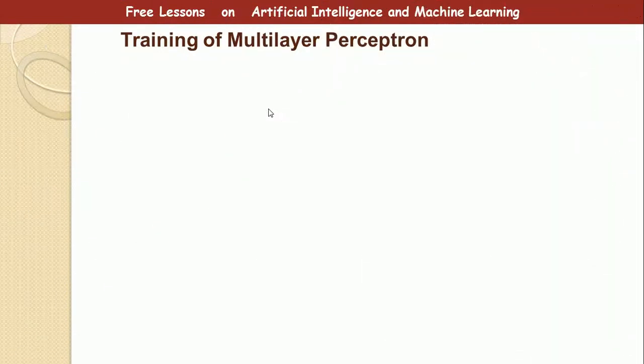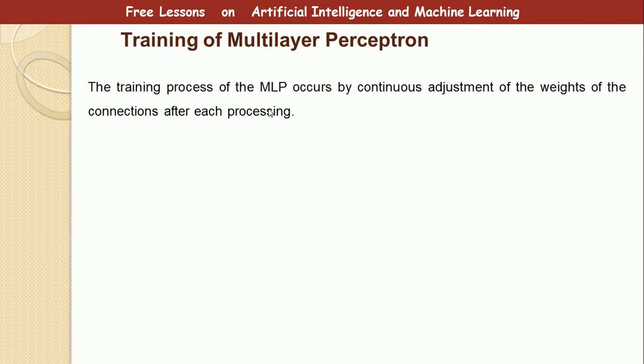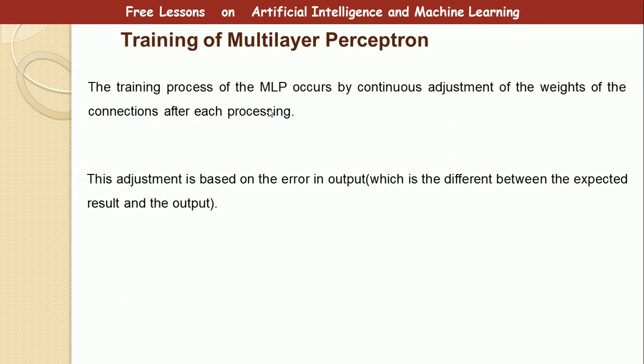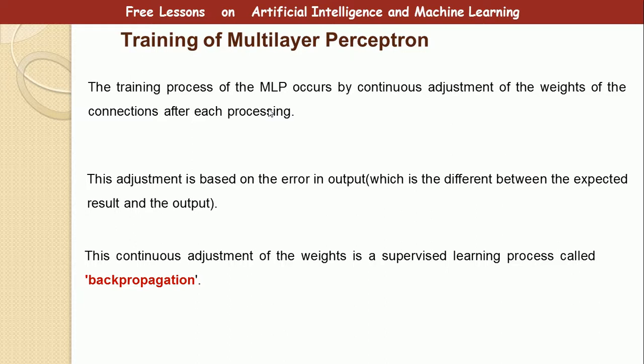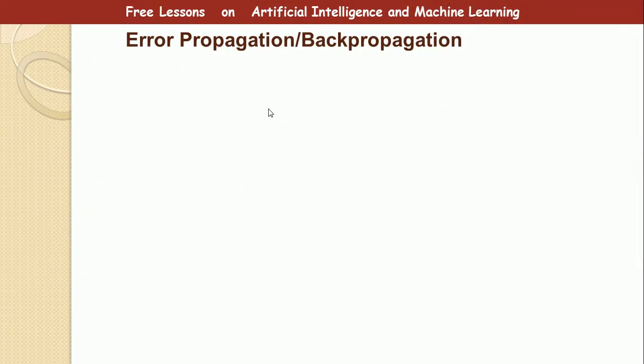Now, how do we train the multilayer perceptron? What is training in the first place? Training occurs by continuous adjustment of the weight of the connections after each processing. Remember the output might be wrong. So, to train the network you want to inform it the correct outputs and it makes some adjustments to get close to these outputs. So it continually checks the error between the output it produces and the actual outputs and continues to make necessary adjustments until it gets a minimum error.